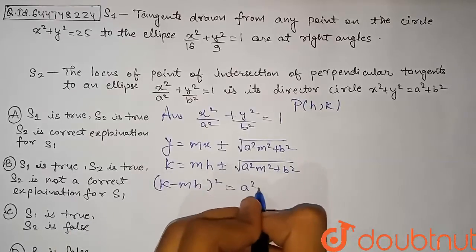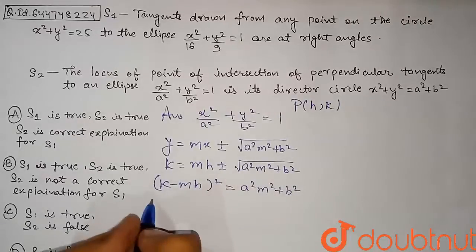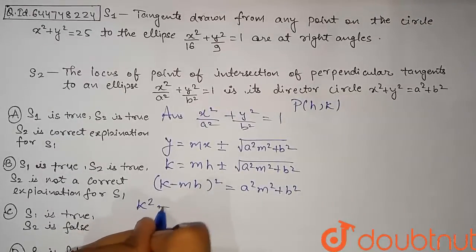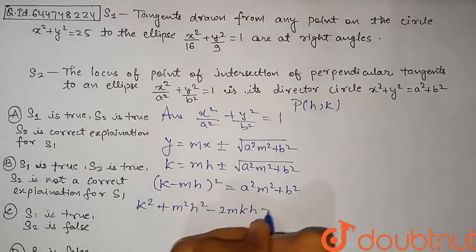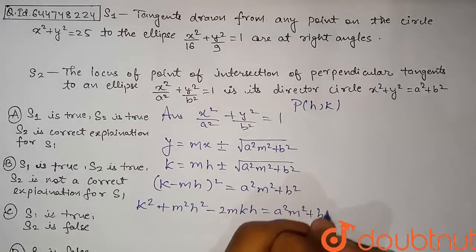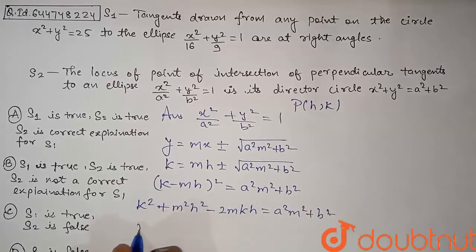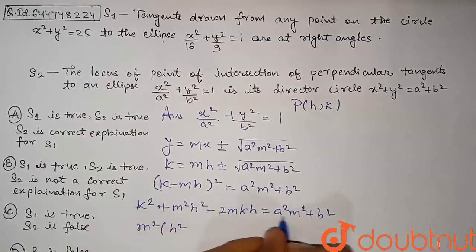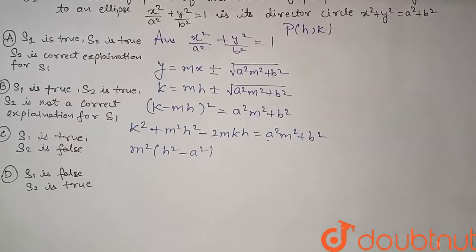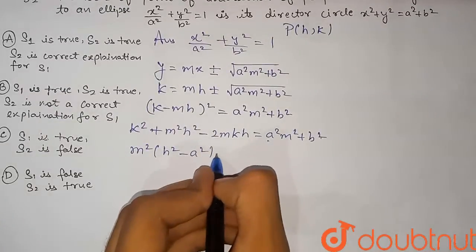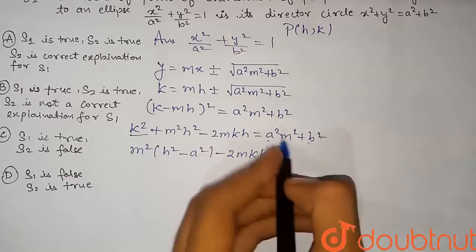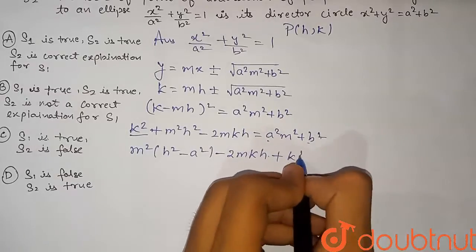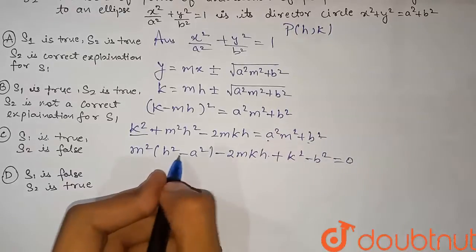Expanding the left side: k² + m²h² − 2mkh = a²m² + b². Rearranging, we collect terms in m to get a quadratic in m: m²(h² − a²) − 2mkh + (k² − b²) = 0. This is a quadratic equation in m, whose two roots m₁ and m₂ represent the slopes of the two tangents from (h, k) to the ellipse.